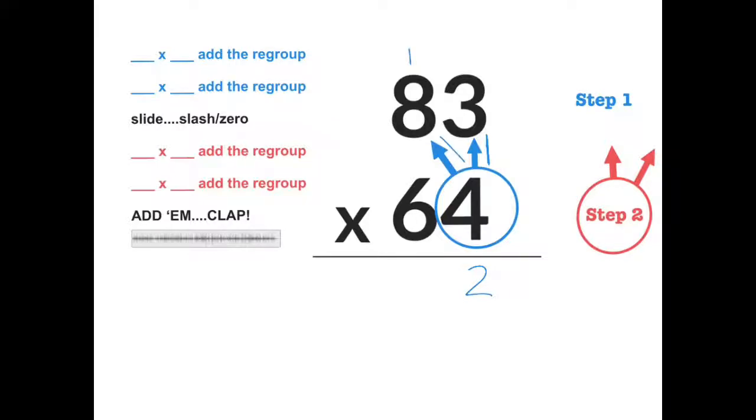My next problem is four times eight, so that's why I put my one right above the eight. So four times eight equals thirty-two. Then I have to add the regroup, that one, to get thirty-three. So I put my first three, let's make that a little neater, my first three directly under my eight, and I put my three in the next place.